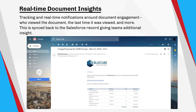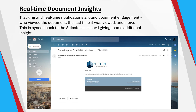Real-time Document Insights falls under Composer Advanced Features, which was an update to Conquer's Enterprise Edition in 2020. Document Insights delivers a document using a link, which removes restrictions on file sizes as you would have sending as an attachment. You also get document tracking and real-time notifications around document engagement, such as who viewed the document, the last time it was viewed, and more. This tracking is synced back to the Salesforce record and gives teams additional insight.